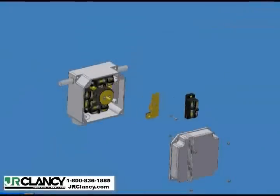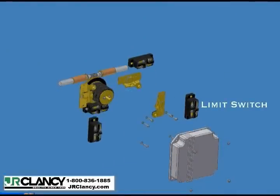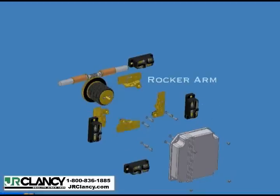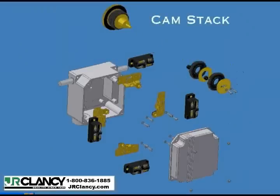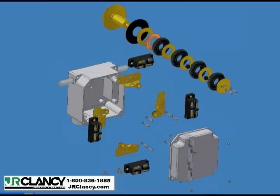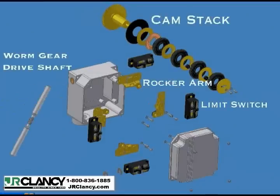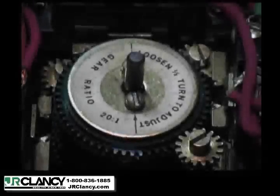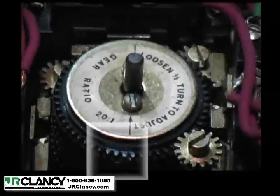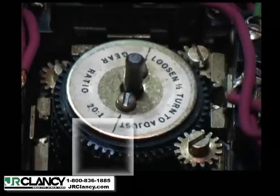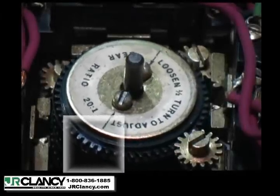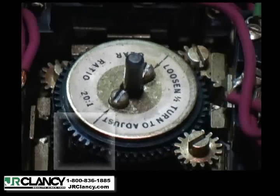Here we see an exploded view of the rotary limit switch. Notice the four limit switches, the four rocker arms, the components of the central cam stack, and the worm gear drive shaft. On the upper cam stack slice there is a white marker. This marker indicates the position of the lobe that causes the rocker arm to trip the limit switch.